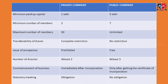Regarding transferability of shares: in the case of a private company there is a complete restriction — there is no option to transfer shares. In the case of a public company there is no restriction; anyone can easily buy and sell shares. Another factor is the issue of prospectus, which is an invitation to the public to make an investment. In the case of a private company it is prohibited, while in the case of a public company it is free to issue a prospectus. Regarding directors: a private limited company needs at least 2 directors, while a public company needs at least 3.